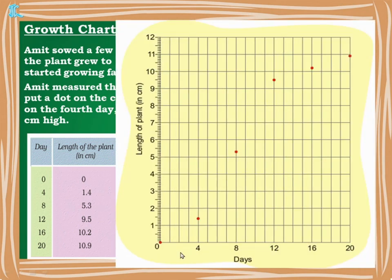Looking at the chart: Day 0 height is 0. Day 4: 1.4 cm — correct, slightly less than 1.5. Day 8: 5.3 cm — correct. Day 12: 9.5 cm — correct. Day 16: 10.2 cm — correct. Day 20: 10.5 cm — also correct. You can use a scale to measure the dots and verify the values.